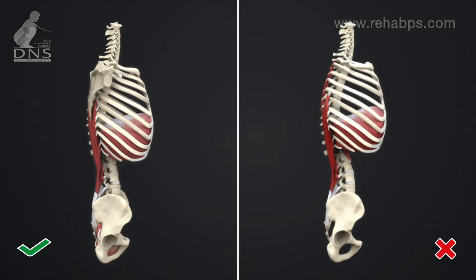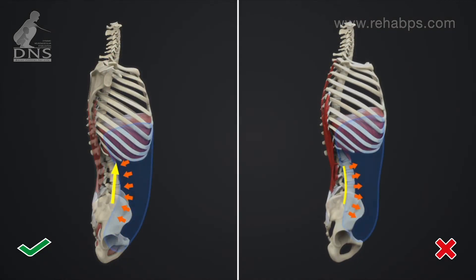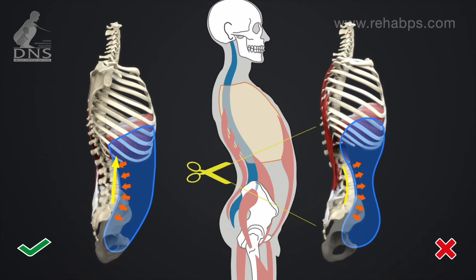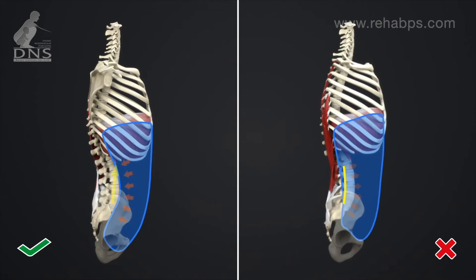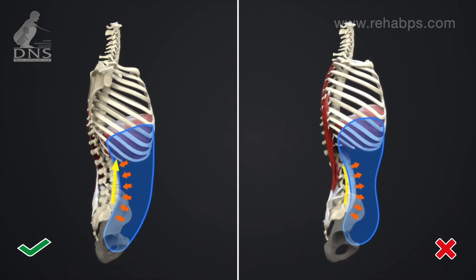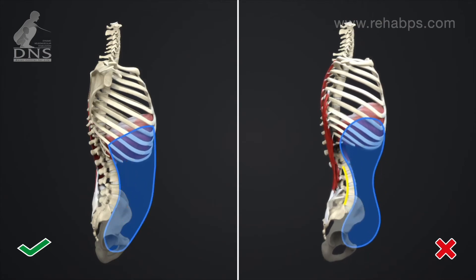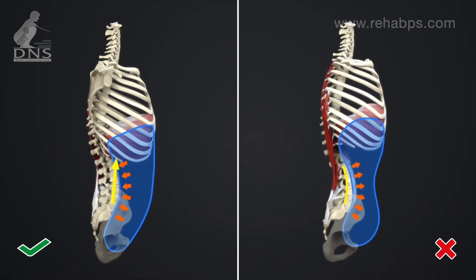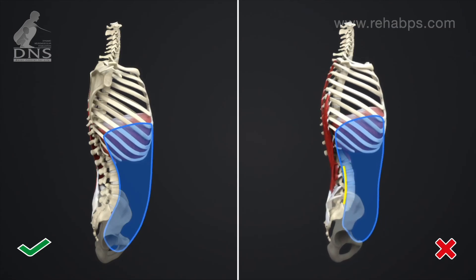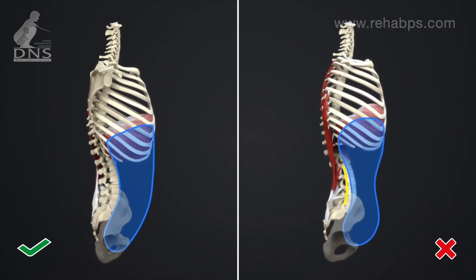The insufficient contraction of the diaphragm can be caused by a more slanted positioning of the axis of the diaphragm in the sagittal plane, trunk stiffness especially in the lower segment, or imbalanced activity of the stabilizing muscles.